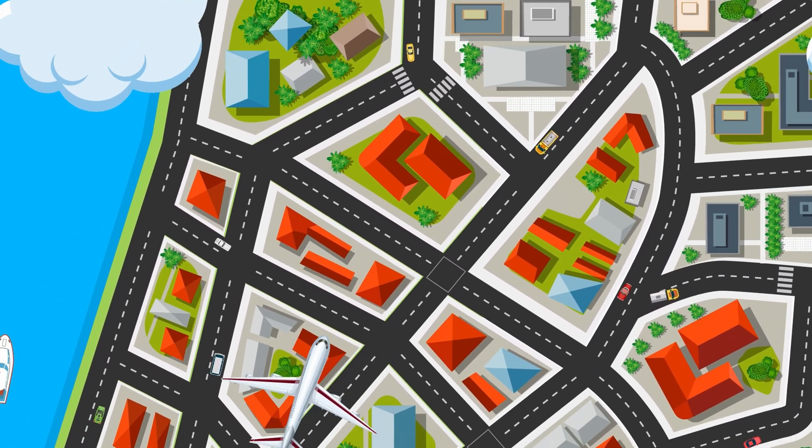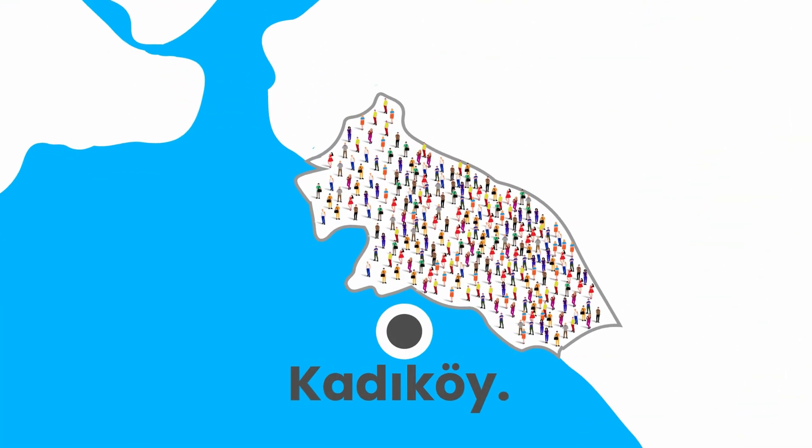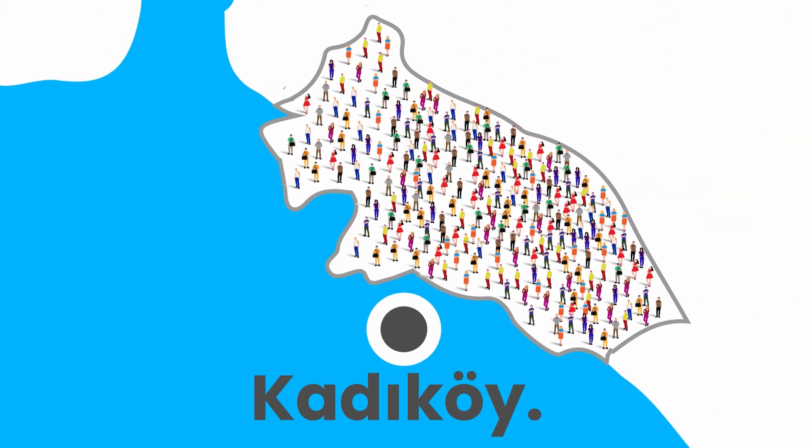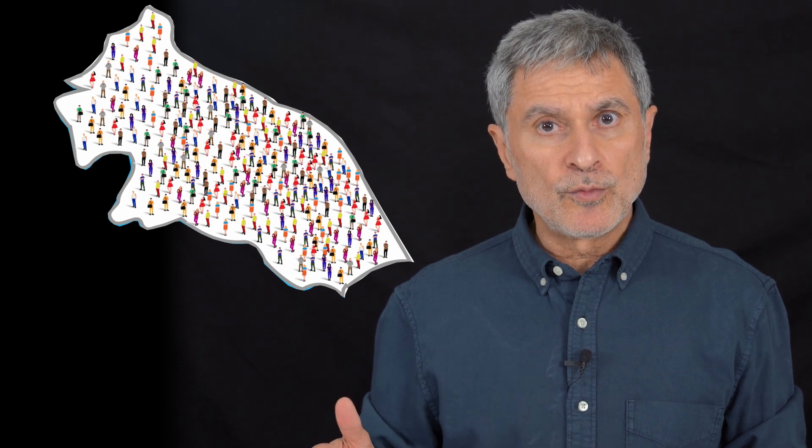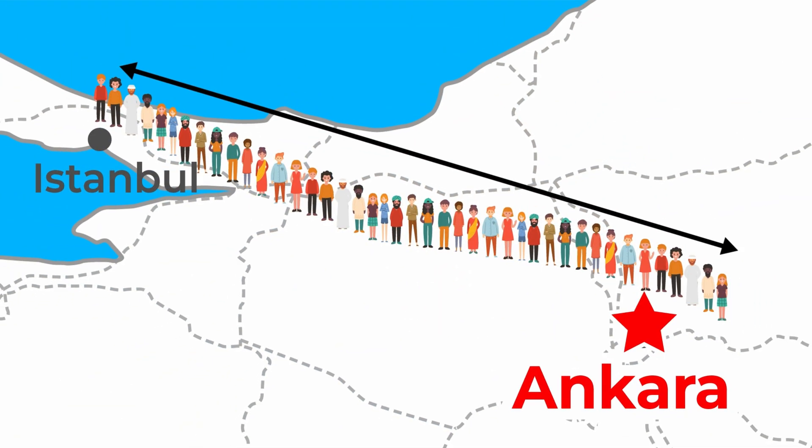This is Istanbul, Kadıköy district. If we expand Kadıköy a little, its population will be 700,000. If these 700,000 people were lined up side by side, if we assume that each person's shoulder width is 70 centimeters, how many kilometers long would a human strip be? There will be a human strip of 490 kilometers long. If people were lined up side by side from Istanbul, the distance would stretch past Ankara.